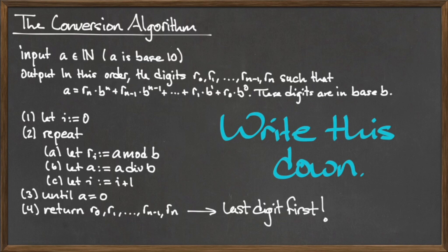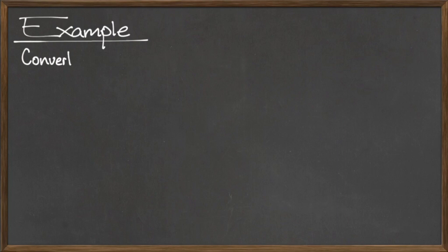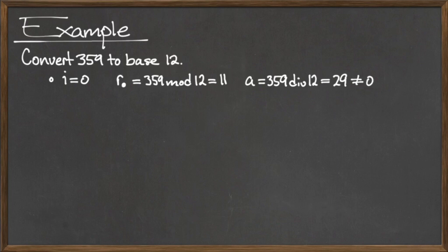For example, to convert the number 359 to base 12, we begin by creating the variable i and assigning it the value 0. Then, we enter the loop, create the variable r sub 0, and assign it the value 359 mod 12, which is 11.